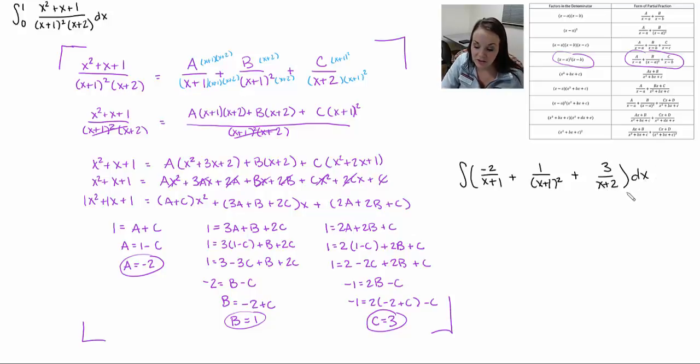So now I can do the integral of each of these separately. So I end up with negative 2 ln of x plus 1 minus 1 over x plus 1 plus 3 ln of x plus 2 evaluated from 0 to 1.